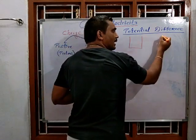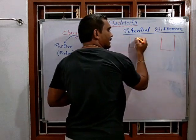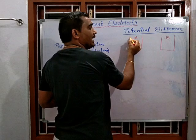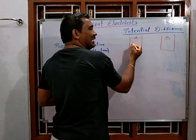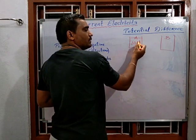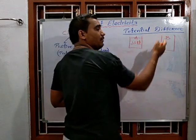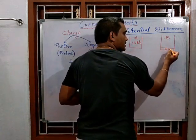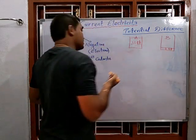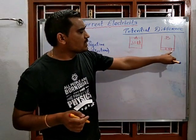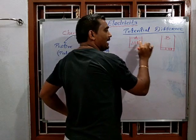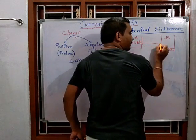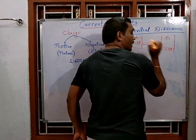I will show you two containers, called A and B. Container A has 10 liters of water, whereas container B has just 2 liters of water. If I connect A and B with a pipe...